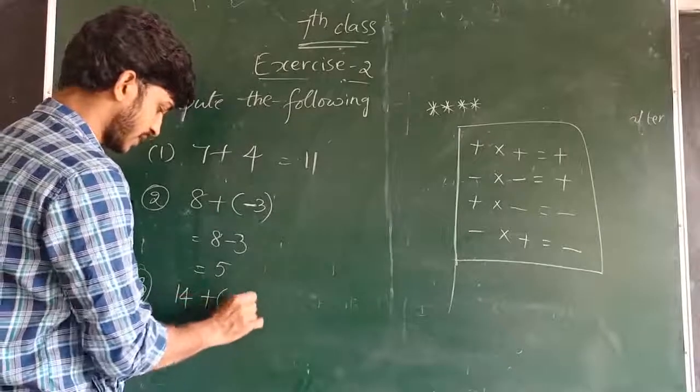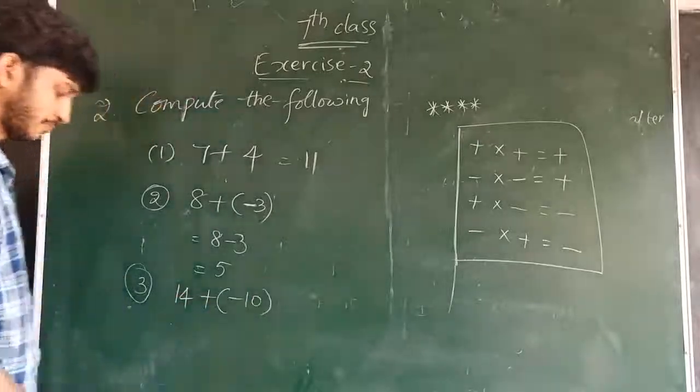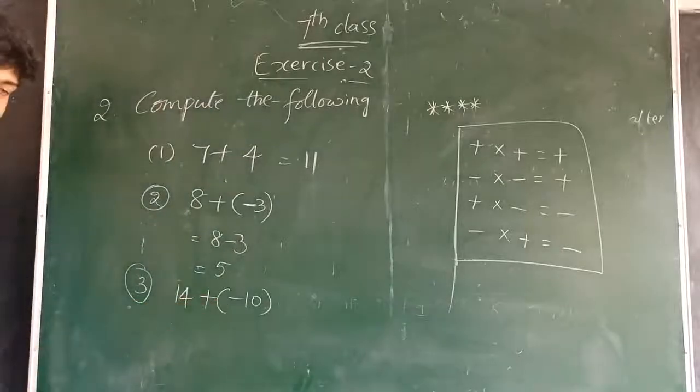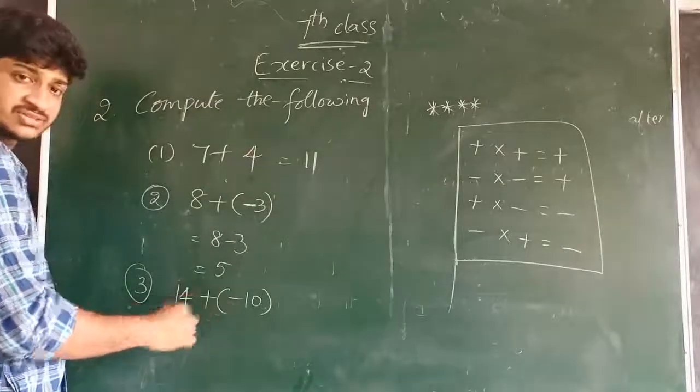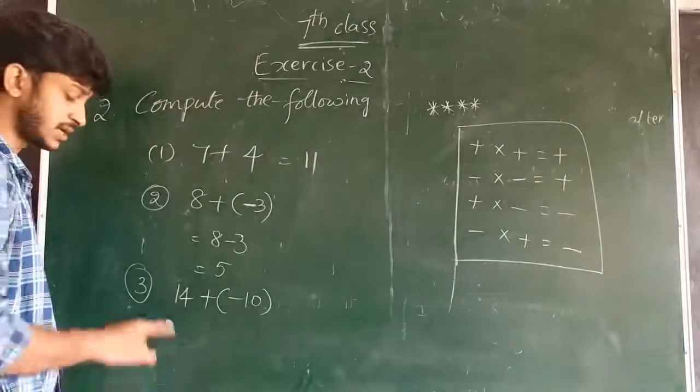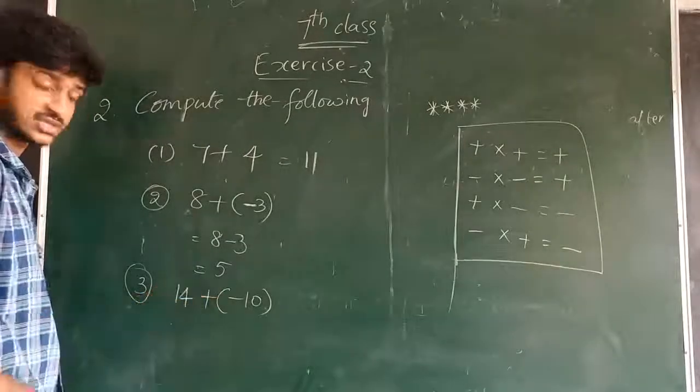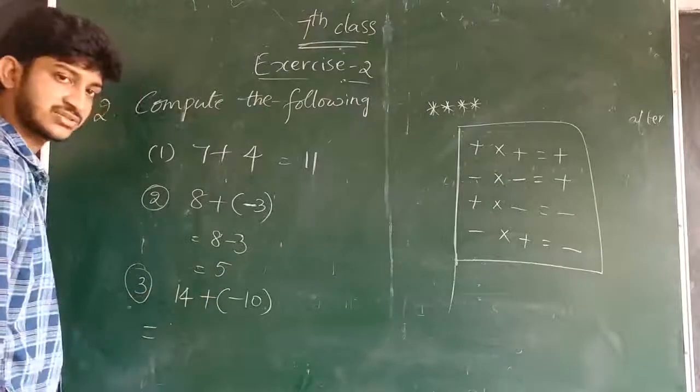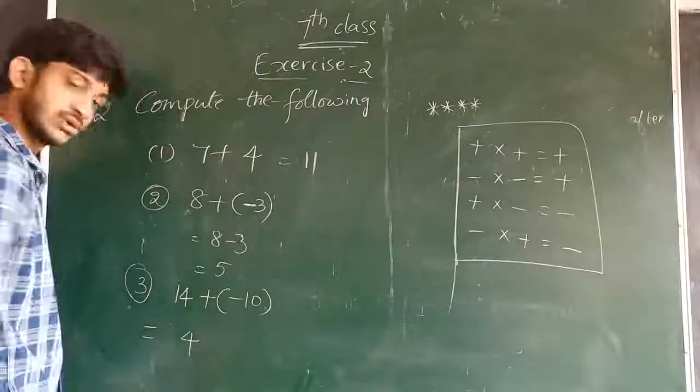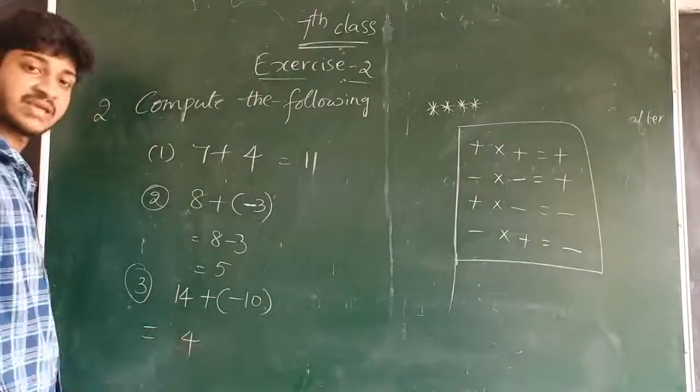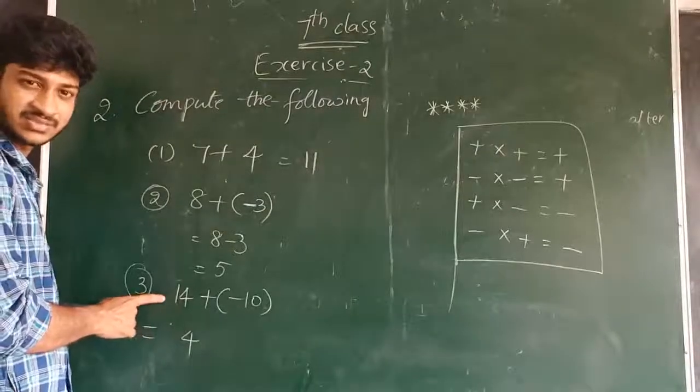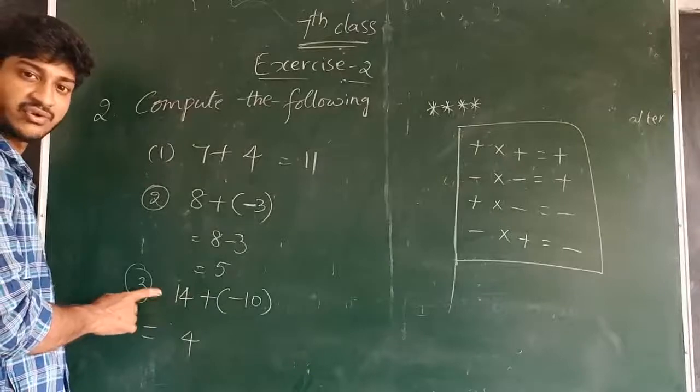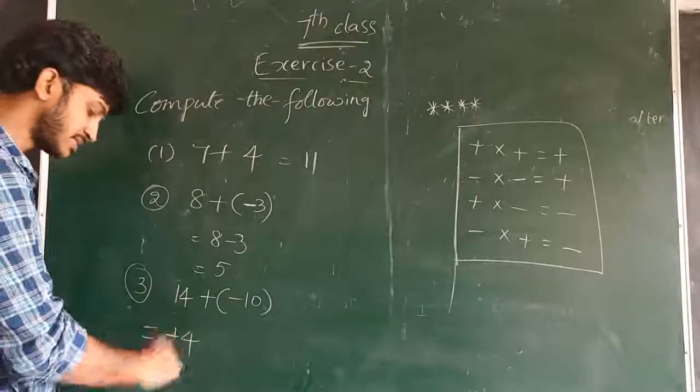14 plus minus 10. I am taking 14 plus minus 10. We already know that two different signs means the largest number minus the smallest number. Largest number is 14 minus 10, subtraction, and the answer is 4. The symbol of the largest number, the largest number is 14, 14 is positive, so the answer is plus 4.